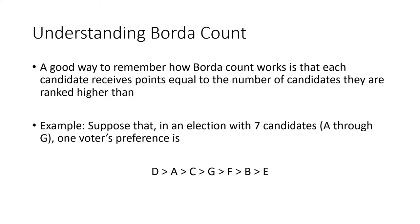Another way to think about how the Borda count works is that we're giving points to a candidate based on how many candidates they beat — how many candidates they are ranked higher than. For example, if you had an election with seven candidates A through G, E is in last place, so last place is always worth zero. B at least beat E, so because they beat one candidate they get one point. F is ranked higher than B and E, so F beat two candidates and gets two points. D would get six points for a ballot because D beat six candidates.